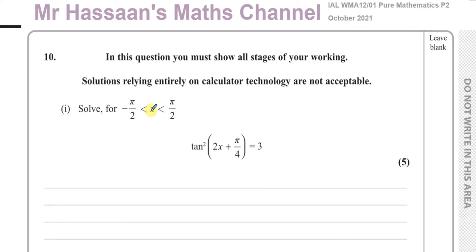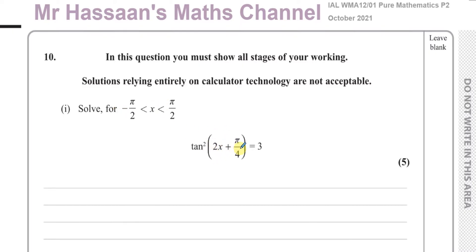The question tells us to solve for x between minus π/2 and π/2, the equation tan²(2x + π/4) = 3. The first thing I'm going to do is look at these limits and change them so that they match what's written inside the trig function — which is 2x + π/4, not just x. We have to make sure we don't lose any solutions.